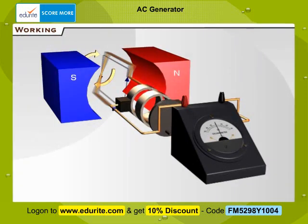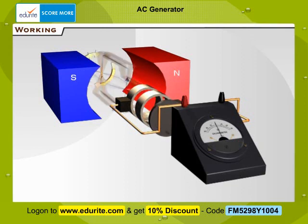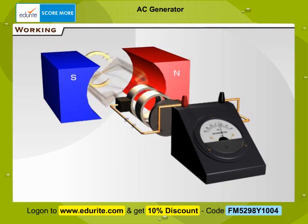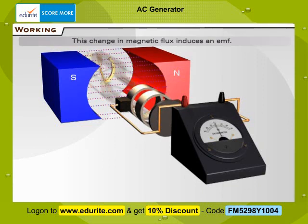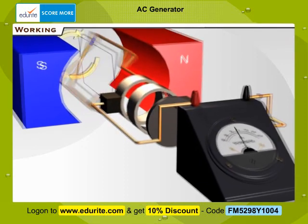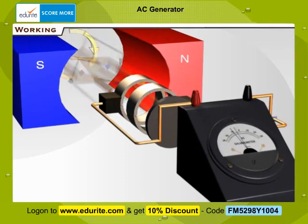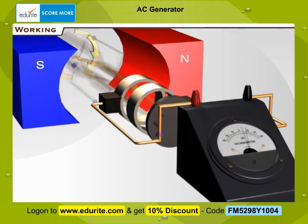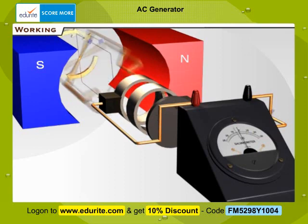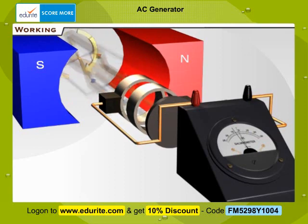Working: As the armature rotates about an axis perpendicular to the magnetic field, it keeps on changing its relative orientation with respect to the field. Thus, the flux keeps on changing continuously with time. This change in magnetic flux induces an EMF. If the outer terminals of the armature are connected to an external circuit, an electric current flows through it. The deflection of the galvanometer needle indicates that an EMF is induced.